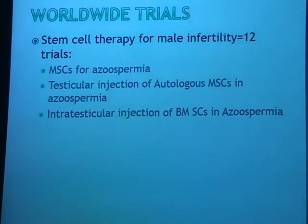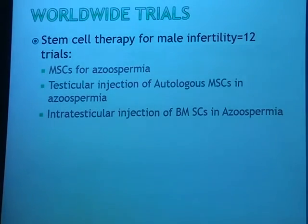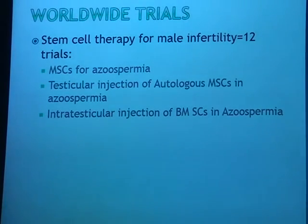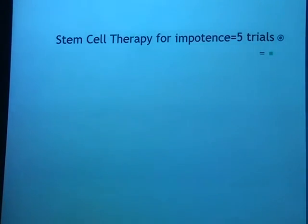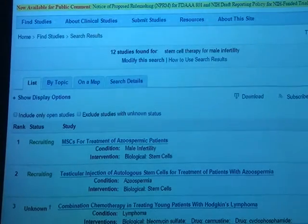There are worldwide trials using stem cells for regeneration of fertility. For stem cell therapy for male infertility, we can find 12 trials, including mesenchymal cells for azoospermia, testicular injection of autologous mesenchymal stem cells, and intratesticular injection of bone marrow stem cells in azoospermia. We can also find stem cell therapy for impotence, with five trials listed in clinicaltrials.gov.